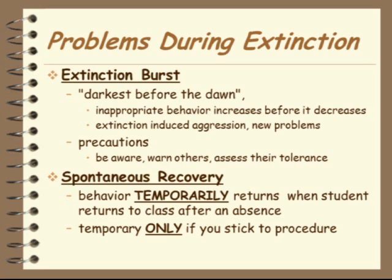Another aspect of extinction is spontaneous recovery. Spontaneous recovery happens when you've used extinction and then there is a period of time when the person is away from the setting. For instance, if you've been using extinction in a classroom and you go away for a holiday break, don't be surprised if you see a return of a behavior that had previously gone through extinction. It usually doesn't last very long if you continue extinction. Each time the student is removed and comes back, spontaneous recovery will occur, but the behavior will be at a lower and lower level until it's finally completely gone, as long as you keep withholding reinforcement.